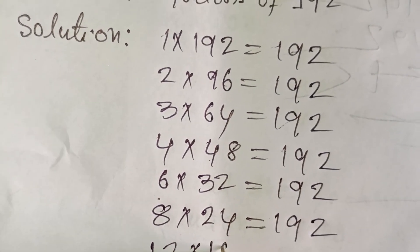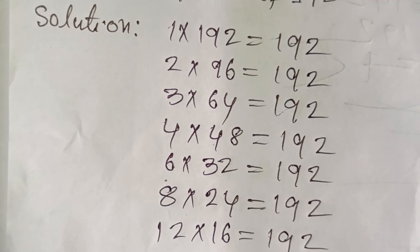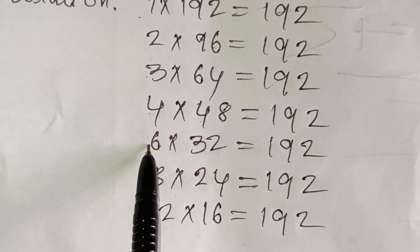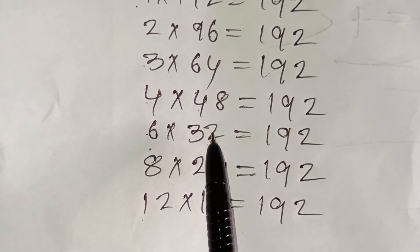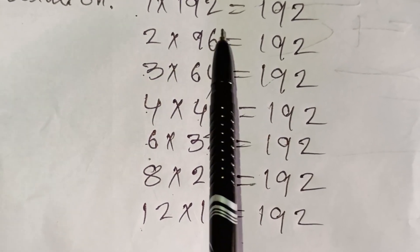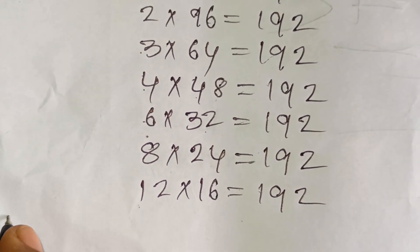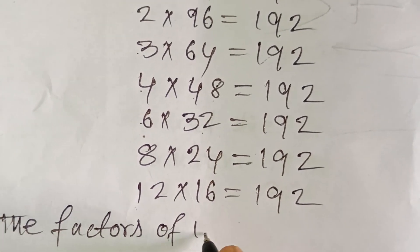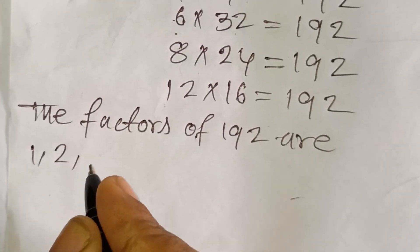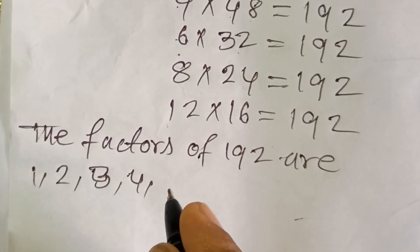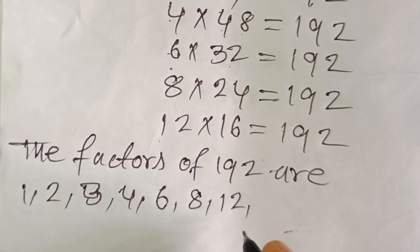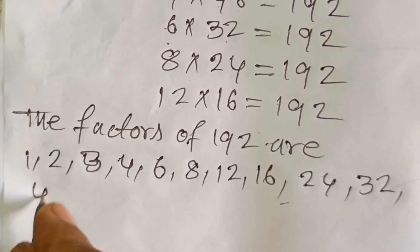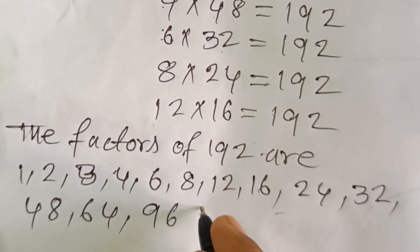12 × 16 = 192. The factors of 192 are 1, 2, 3, 4, 6, 8, 12, 16, 24, 32, 48, 64, 96, and 192.